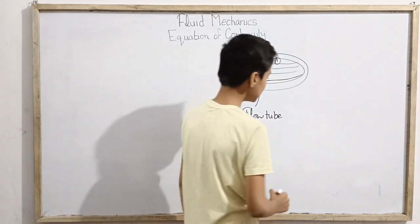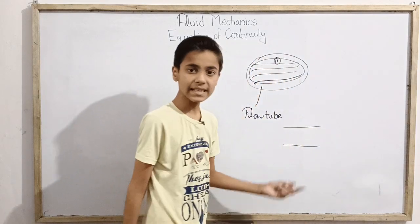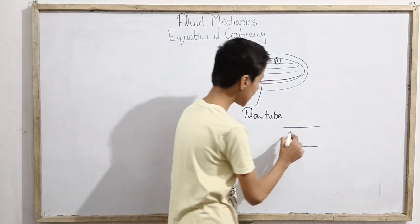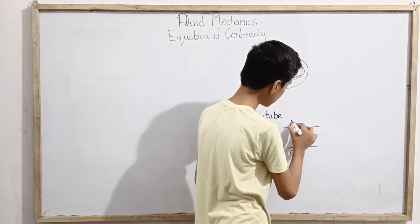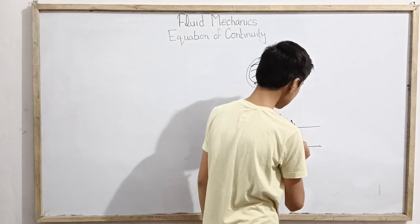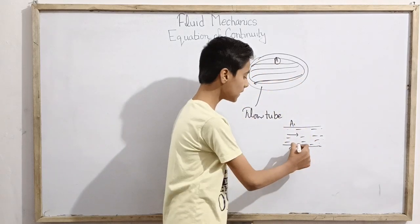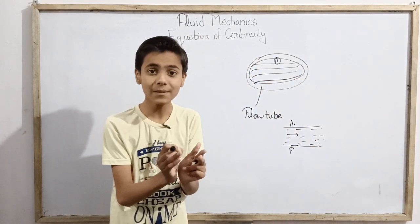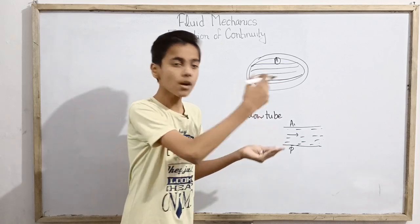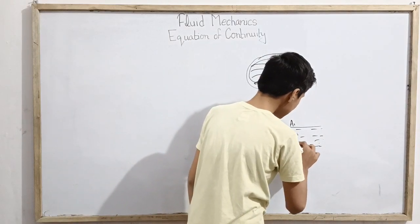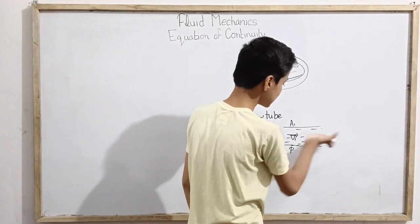Now the equation of continuity uses this concept. Suppose we have a flow tube and a kind of incompressible fluid passes through it. This region has area A1. Incompressible fluid, as I defined in my previous video, means the density of the fluid remains constant and uniform throughout. So the incompressible fluid passes with velocity vector V1 in this direction.